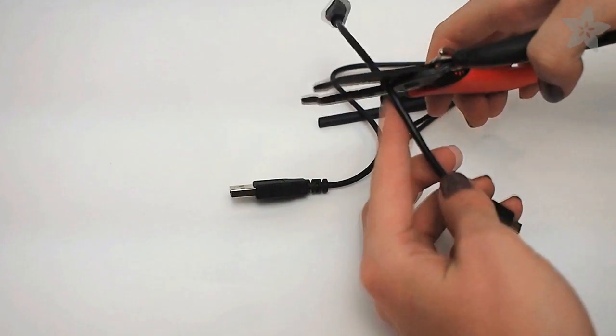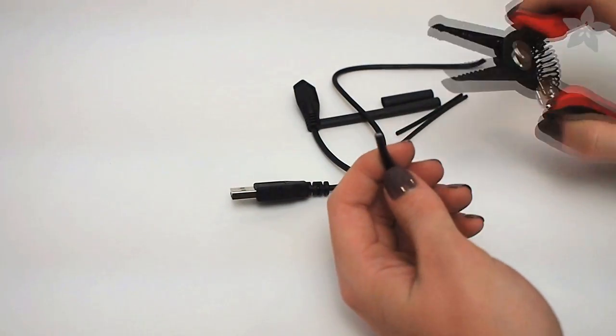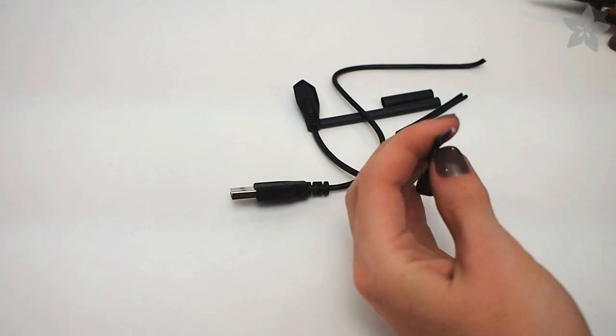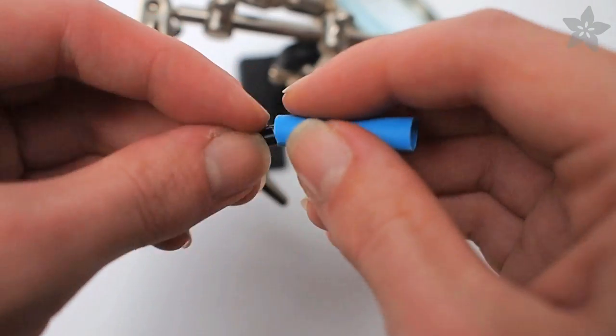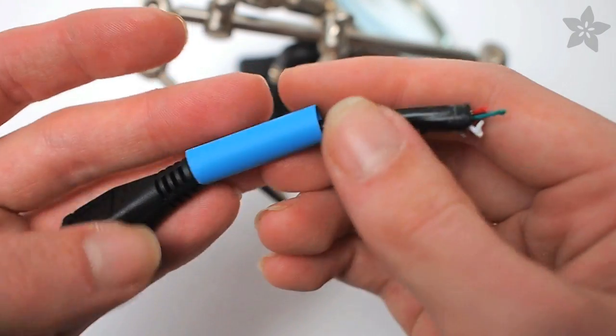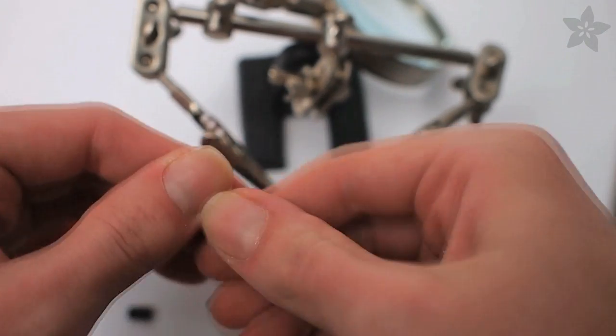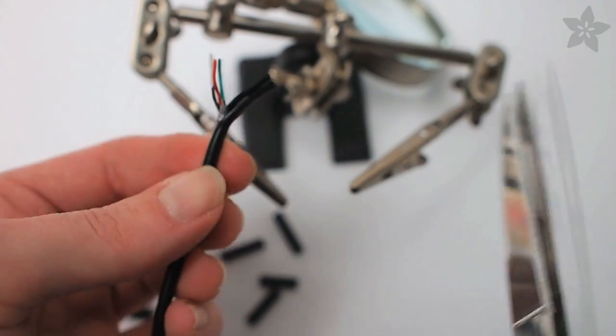Begin by cutting your micro USB cable in half and then stripping off the exterior coating on the wires. Place a large diameter piece of heat shrink tubing over the female end of the micro USB cable, and begin peeling the casing away from the wires so that you can make individual connections.